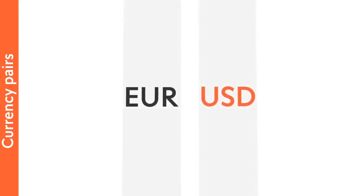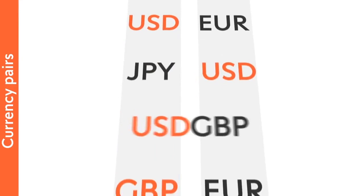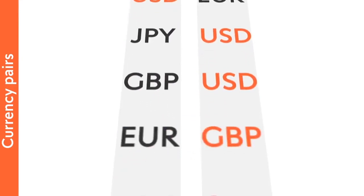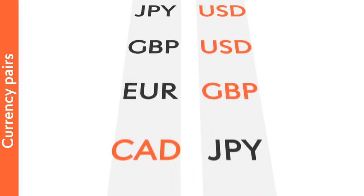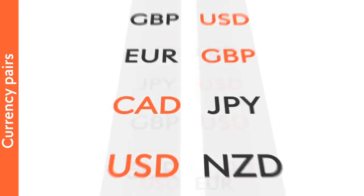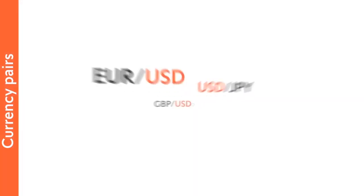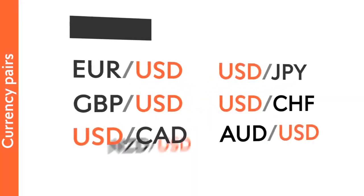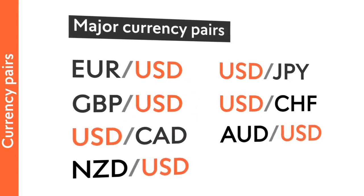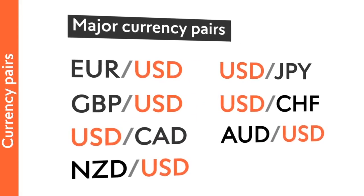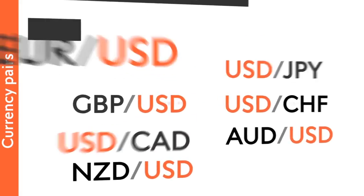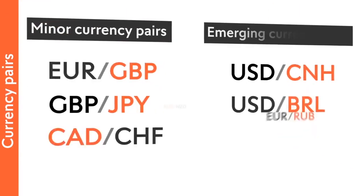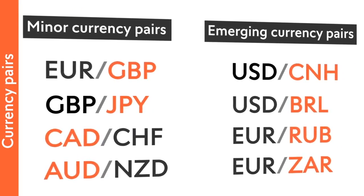When you trade Forex, you trade one currency for another. Forex markets enable you to trade any two currencies in the world. The currency pairs traded most often are called the major currency pairs. Other currency pairs are called minor or emerging currency pairs.